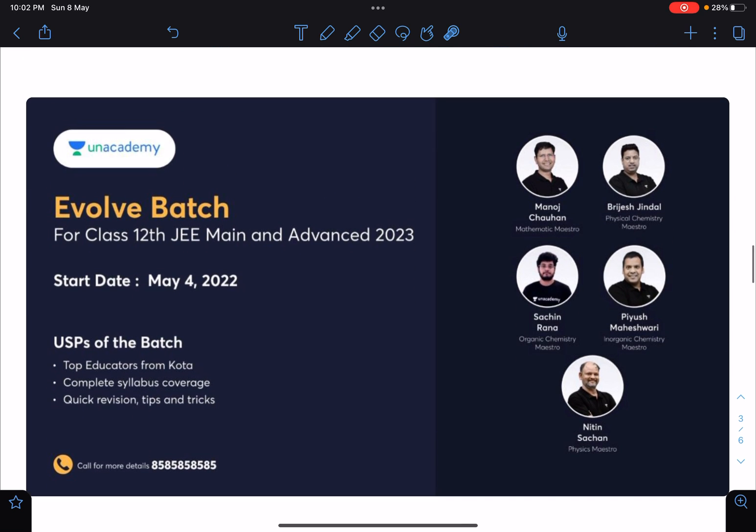And this is the batch for JEE 2023. It is starting, just one class has covered so far. It started on 4th of May but in physics only two classes have been completed.